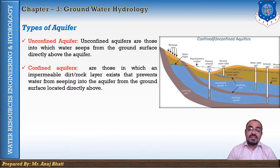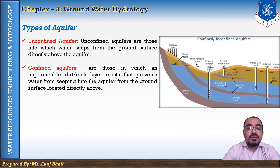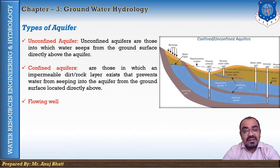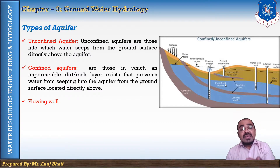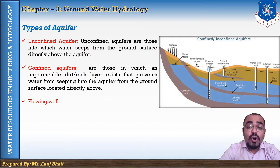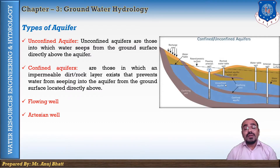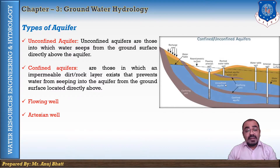Water enters a confined aquifer in an area where the confining bed rises to the surface. A confined aquifer is analogous to a pipeline — if there is a well in this layer, the water will rise up to the piezometric head. If the piezometric head is above the ground, water flows over the ground surface, and such a well is known as a flowing well.